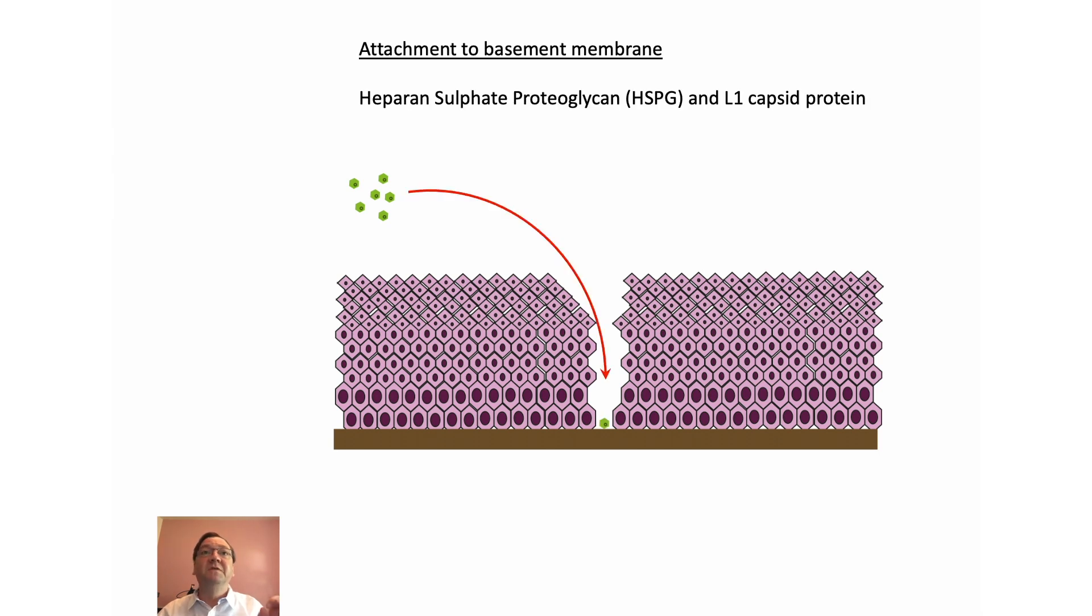The HPV virus gets to the basement membrane, where one of its capsid proteins, L1, binds to heparin sulfite proteic glycan, which is a substance present on the basement membrane.